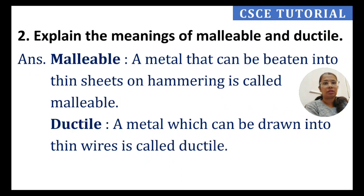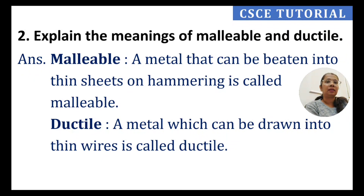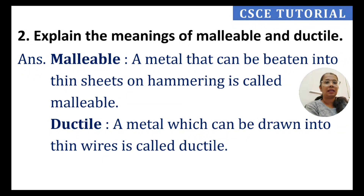Malleability is the property by which thin sheets are made — for example, the aluminum foil we use for food. The silver work decorations are also made using malleability. When a metal can be drawn into wires, like copper wires or silver wires, we call that property ductility.